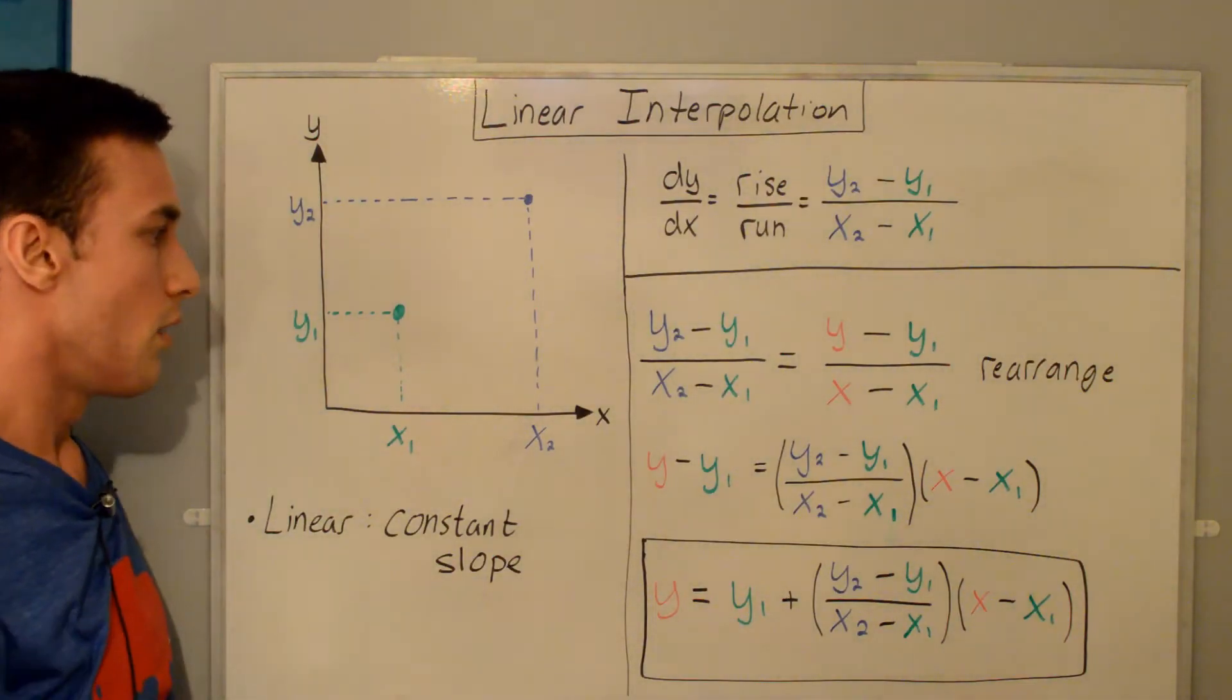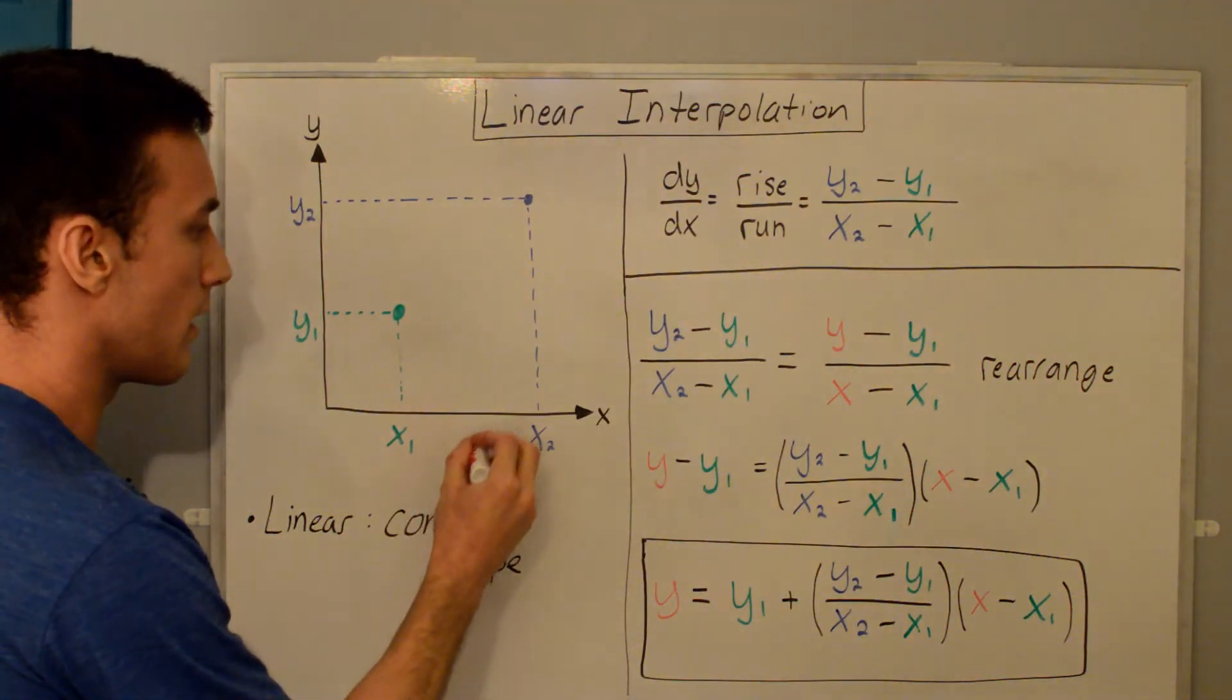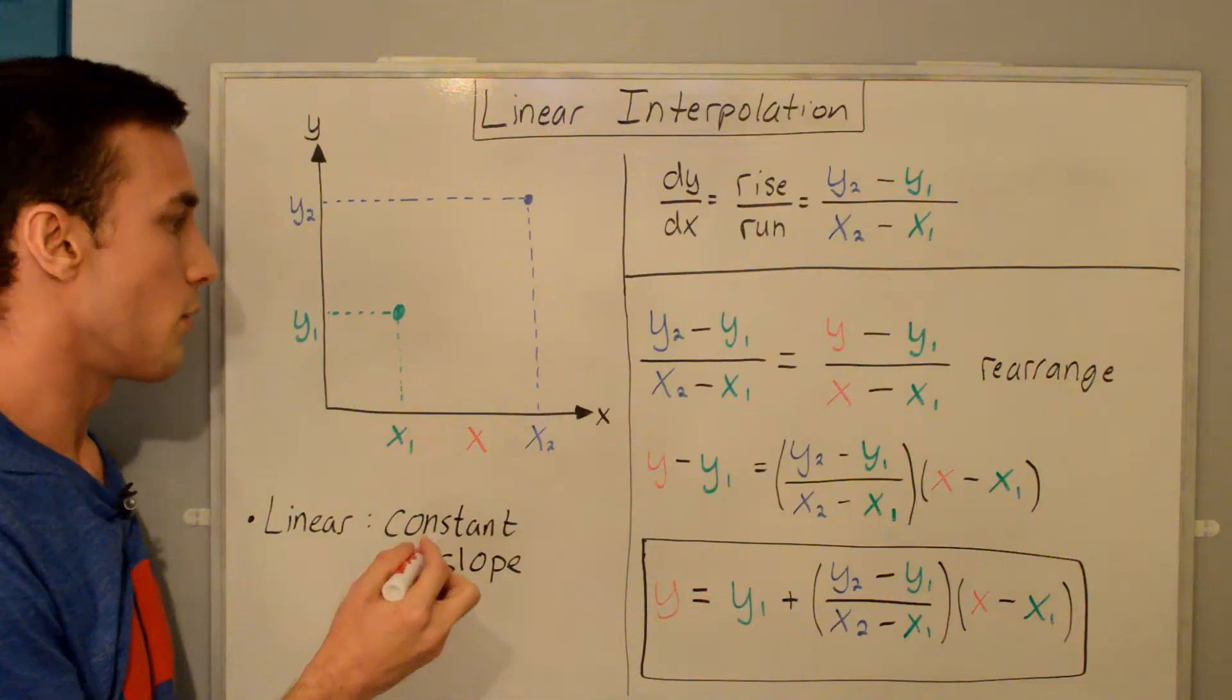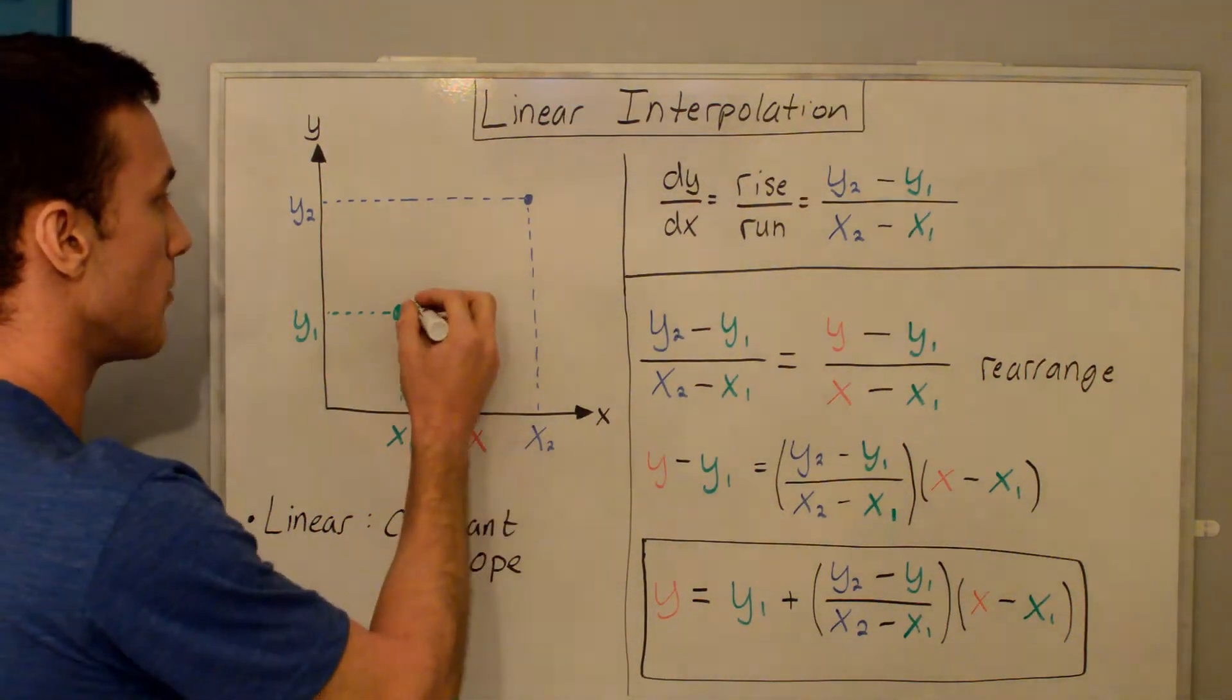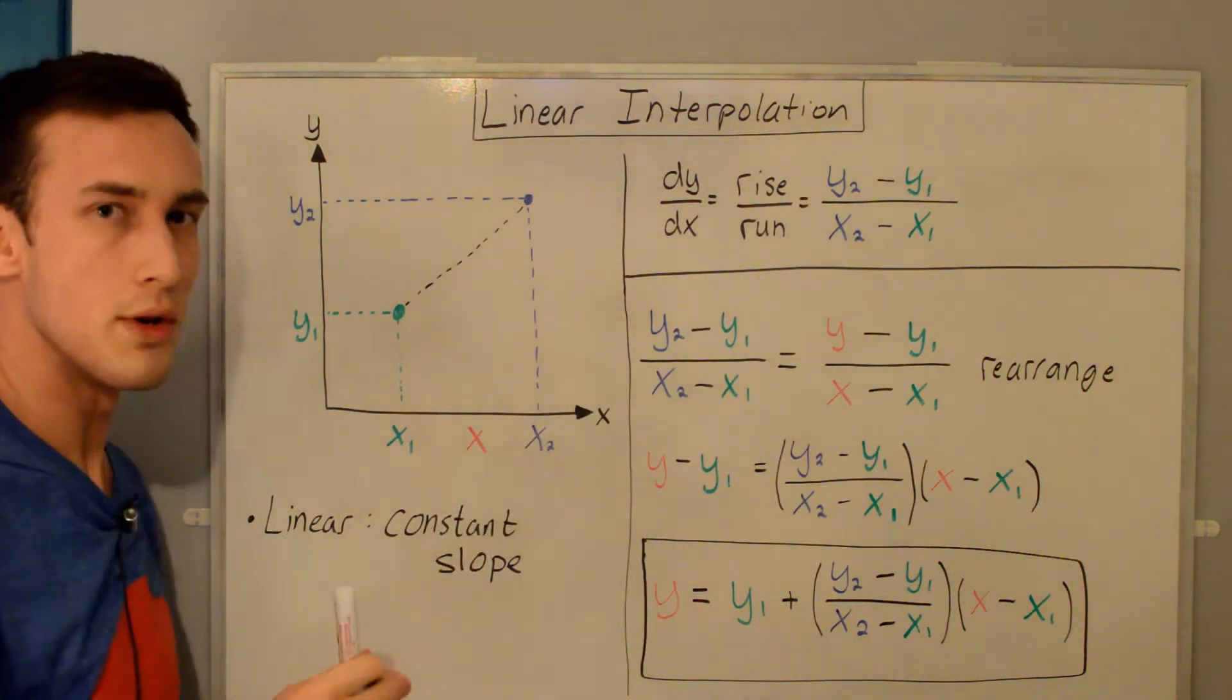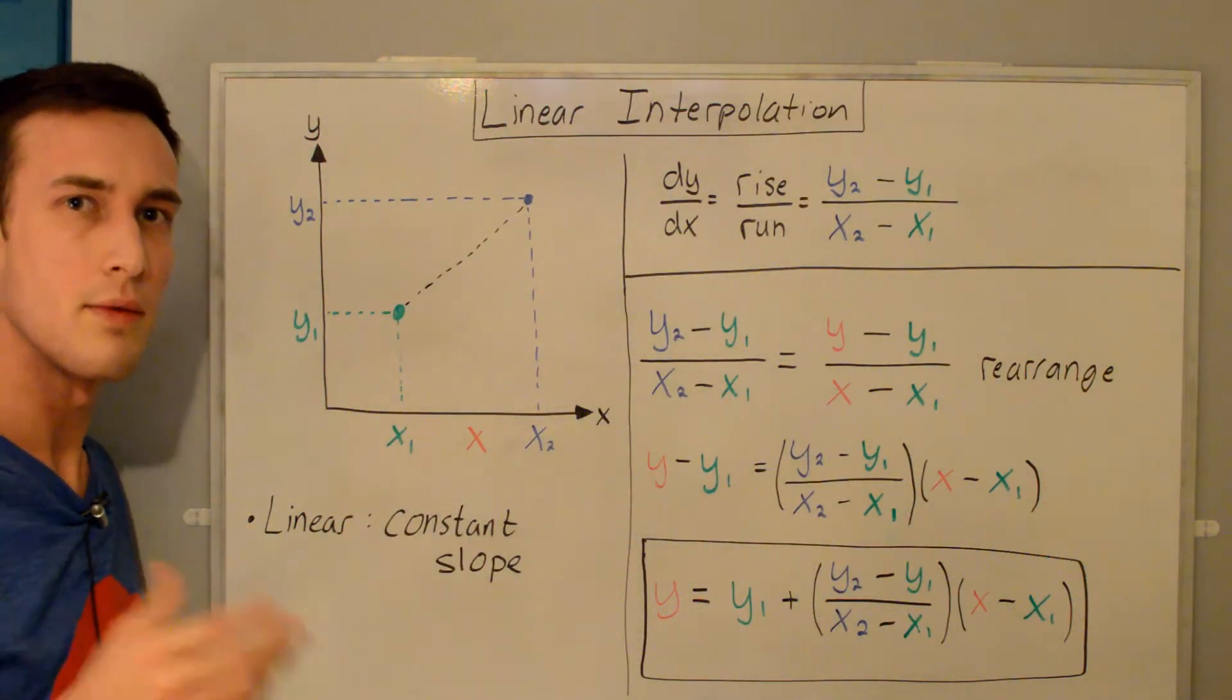The problem is, what happens if I want to get a data point, the value of y, at some x location, x in red. The way that we can do that is to linearly interpolate between these two data points. I'm going to draw a straight line between the two known data points. We're going to assume that we know x. For instance, let's just say we have property, we have a density of some material at a temperature here and a temperature here.